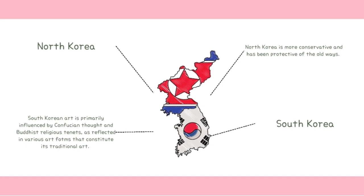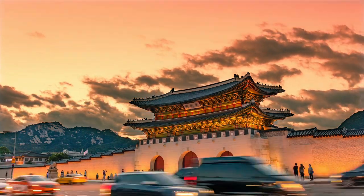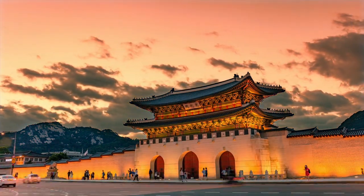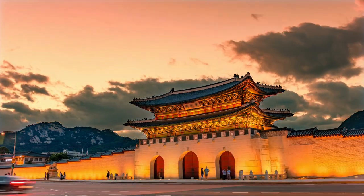South Korean art is primarily influenced by Confucian thought and Buddhist religious tenets, as reflected in various art forms that constitute its traditional art. North Korea is more conservative and protective of the old ways. South Korea, on the other hand, has become more open in enriching its culture by welcoming innovations from foreign sources. It now boasts a rich, colorful, and textured artistic tradition.